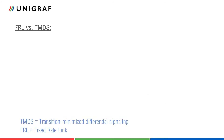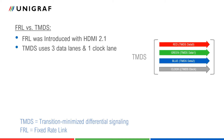Let us first get familiar with the new FRL signaling. FRL signaling was introduced with HDMI version 2.1. It features some major differences compared to the earlier TMDS signaling. TMDS uses three data lanes, each dedicated to one color component — red, green, and blue — and the clock signal uses its own lane.